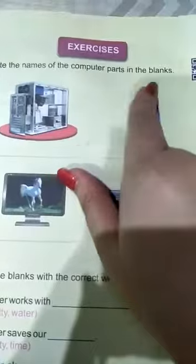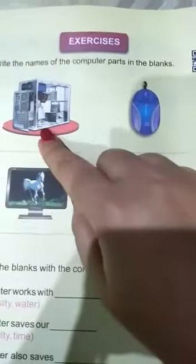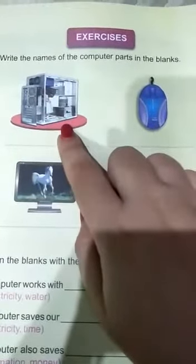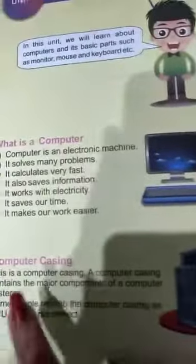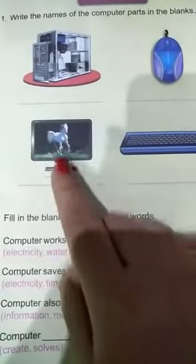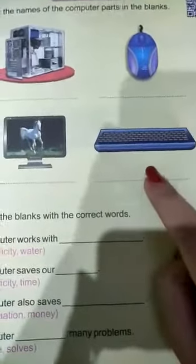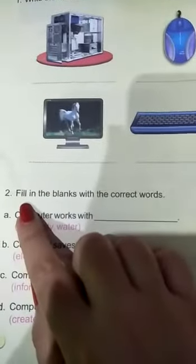Come to question number one: write the names of the computer parts in the blanks. You have to write the name for each image. This one is the computer casing. This one is the mouse. This one is the monitor. This one is the keyboard.